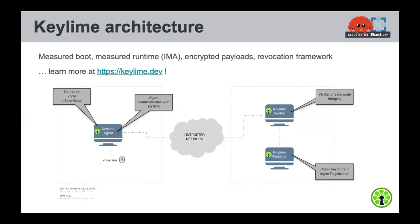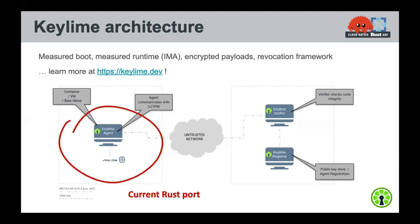At a high level, Keylime offers a way to measure the state of a remote machine during boot as well as at runtime using integrity measurement architecture. It allows encrypted payloads to be delivered to that remote machine after attestation through use of the TPM, and it offers a revocation framework. There's a lot more to know about Keylime — check out keylime.dev. We chose to port the agent component, that remote node, to Rust, as it's a smaller self-contained component, and we're open to potentially porting more.